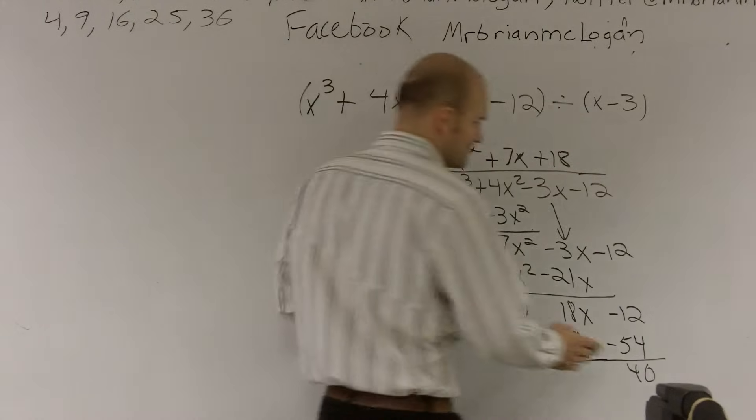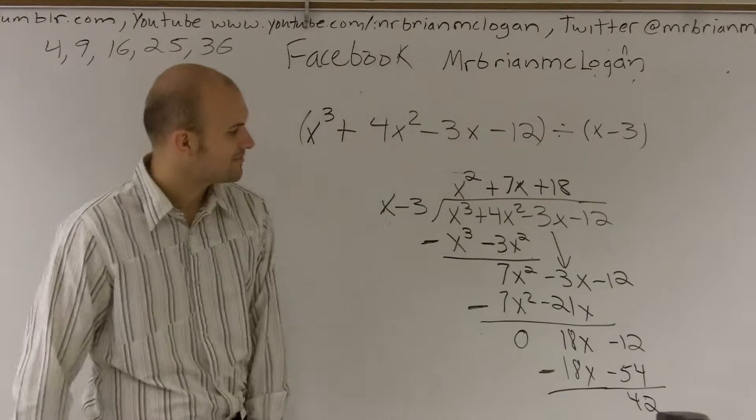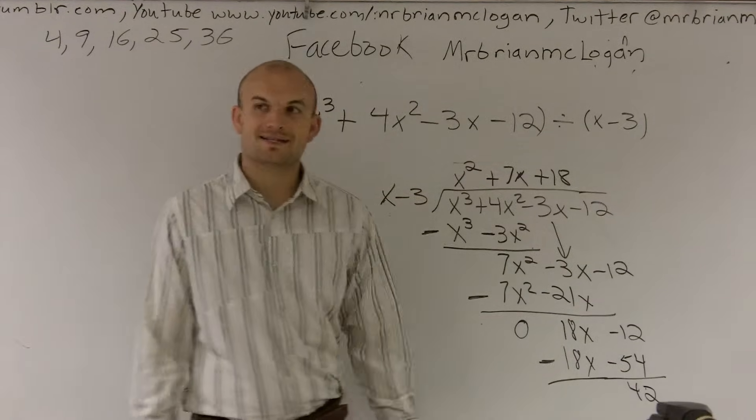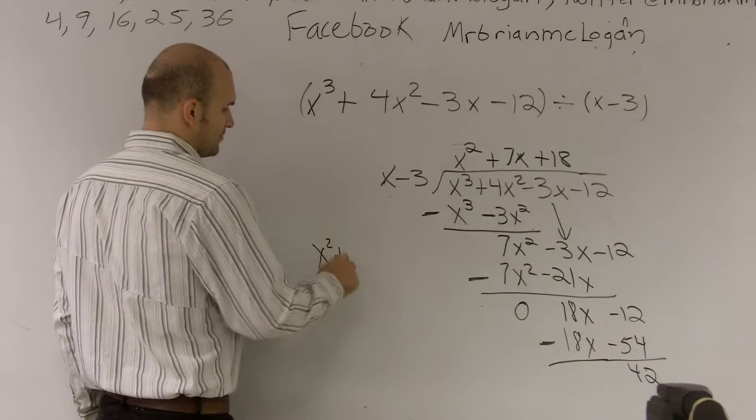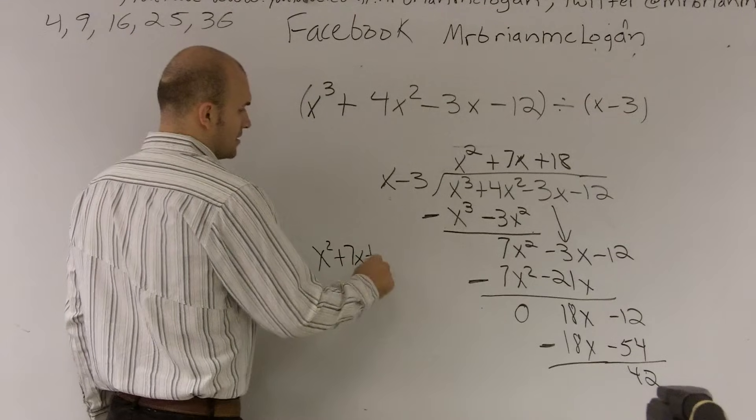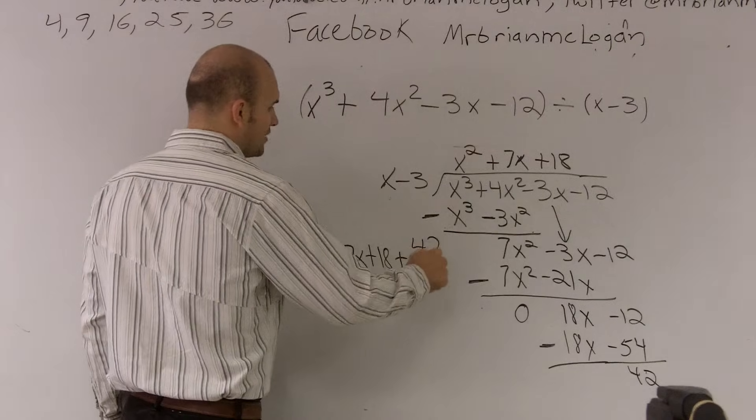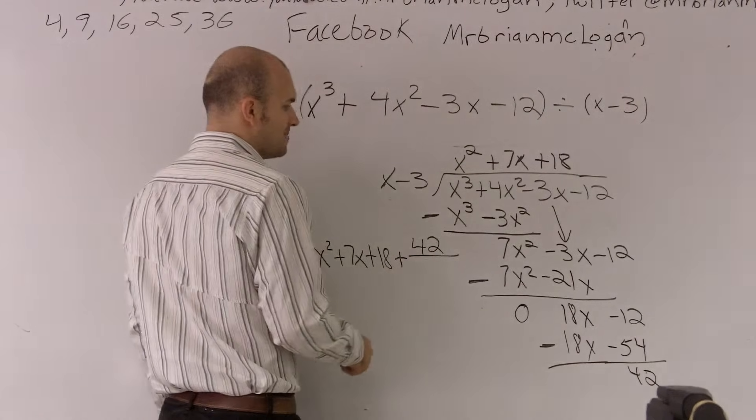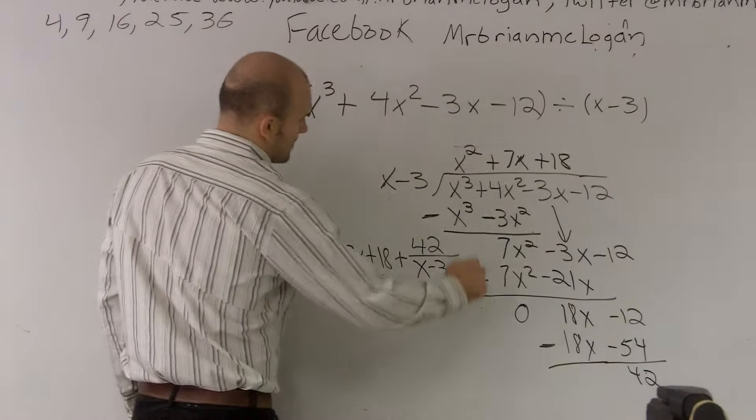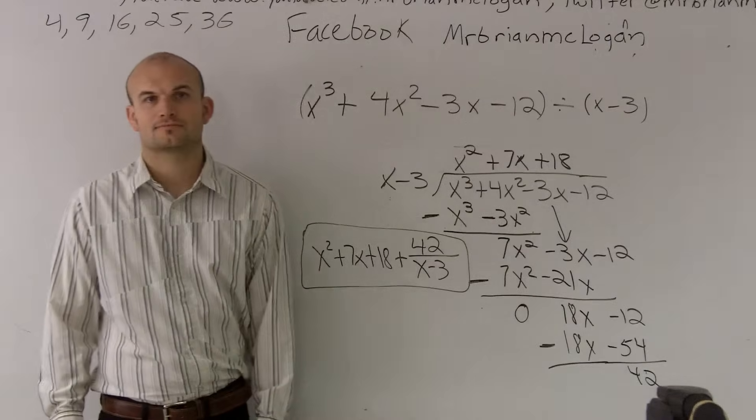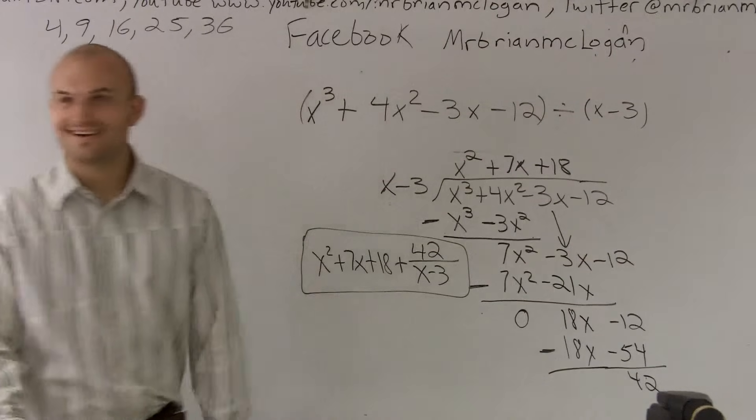So, therefore, my answer, this is how I write it with the remainder. My answer is x squared plus 7x plus 18 plus whatever my remainder, so we don't do like r. We just do your remainder 42 divided by your divisor, which is x minus 3. So that's going to be your final answer.